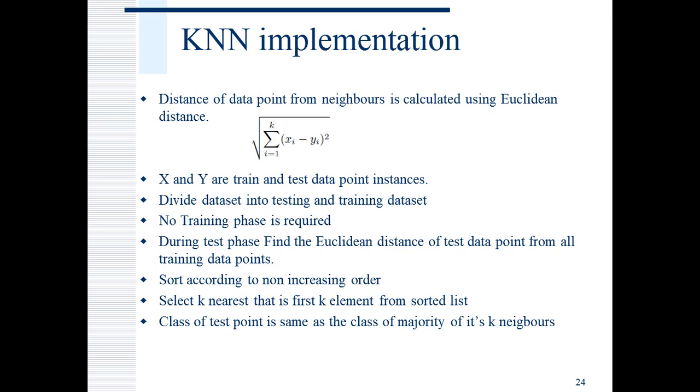For example, consider this picture. Here xq is negative as out of the closest 5 neighbors, 3 are negative. Let us now discuss the implementation. To calculate distance, I have used Euclidean distance. Here x and y are test and training data set. This is the equation for the Euclidean distance calculation. I have divided data set into two parts: training data set and testing data set. Training data set is 70%, testing data set is 30%. Since it is a lazy algorithm, there is no exclusive training phase. I build the model during the testing phase using Euclidean distance and get the predictions. The algorithm works this way: I calculate the Euclidean distance of the data point from all the training data points, sort them in non-increasing order, select the K nearest neighbors from that sorted list. Class of the test point would be same as the class of the majority of the K neighbors.